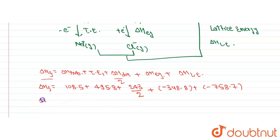So the value of delta H of formation will be equal to minus 381.7 kilojoule per mole. So the value of delta H of formation for NaCl is minus 381.7 kilojoule per mole. Thank you.